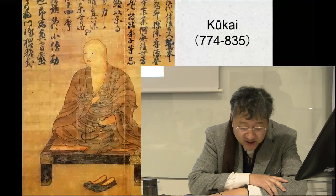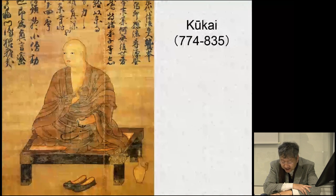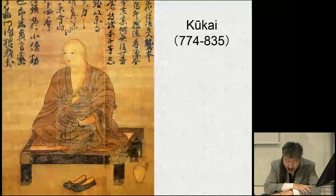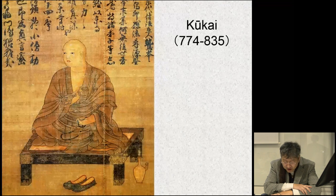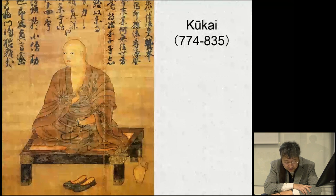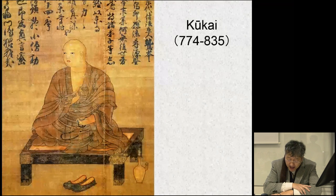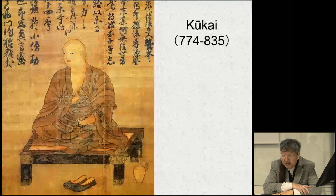In 806, Kukai, the founder of Japanese Shingon sect, after finishing his study under the Chinese master Huiku, brought back the Ryokai Mandala, or the Two World Mandala, to Japan. Henceforth, the Ryokai Mandala has been regarded as the basis of the iconography of Esoteric Buddhism in Japan, exerting considerable influence not only on art but also on Japanese thought and culture.